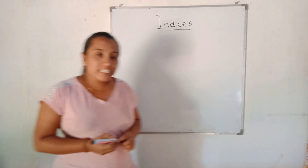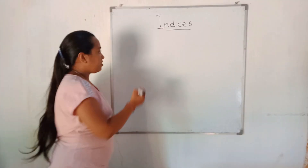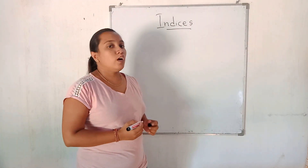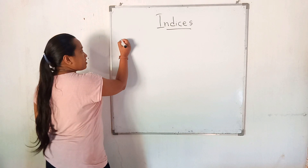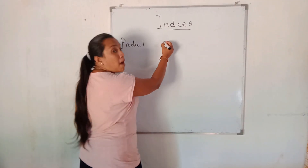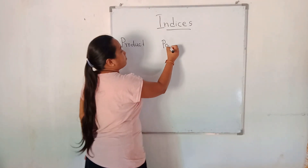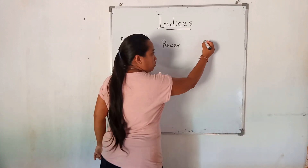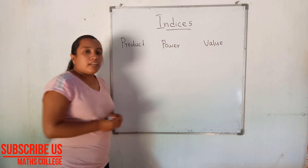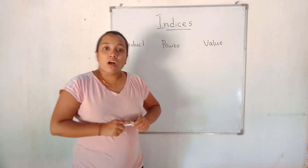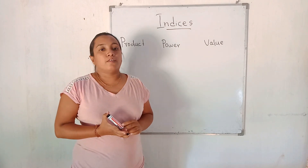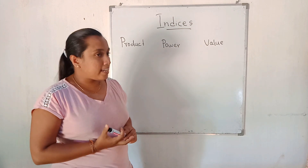In the Indices lesson there are 3 key words. We need to know how to write a number as a power. In the previous grade you learned how to write a number as a product, power, and value. Look at the examples.